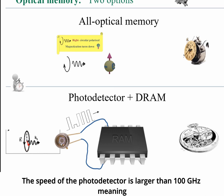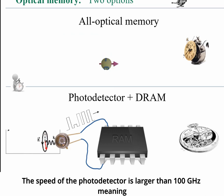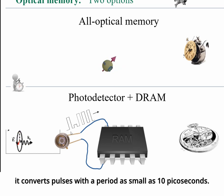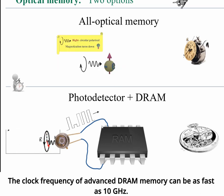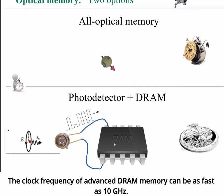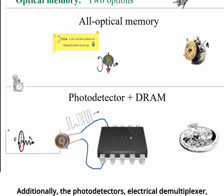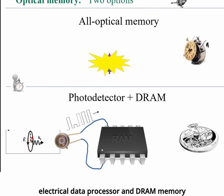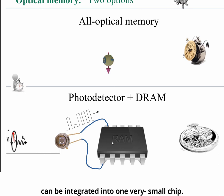The speed of a photodetector is larger than 100 GHz, meaning it converts pulses with a period as small as 10 picoseconds. The clock frequency of advanced DRAM memory can be as fast as 10 GHz. Additionally, the photodetector, electrical demultiplexer, electrical data processor, and DRAM memory can be integrated into one very small chip.